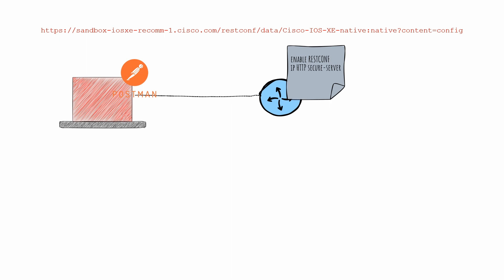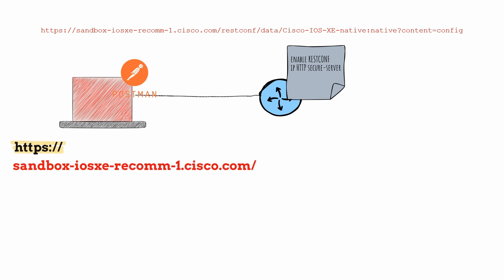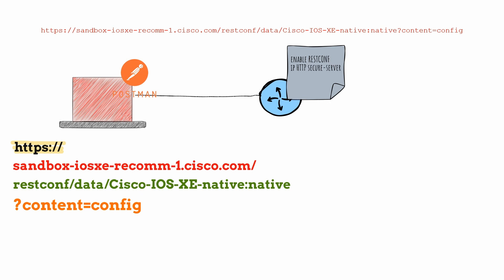The URL is divided into certain parts — for example, what protocol we need, what host we are looking to connect to, what the resource path is, and what parameters we want to provide. So breaking down this HTTP URL, we have: protocol, host, resource path, and parameters.